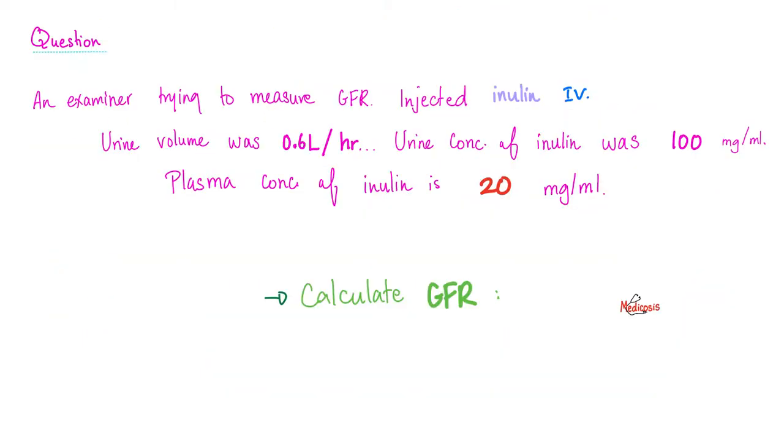An examiner is trying to measure GFR. The examiner injected inulin intravenously. The urine volume was 0.6 liters per hour. Urine concentration of inulin was 100 milligrams per ml. The plasma concentration of inulin is 20 milligrams per ml. Can you calculate the GFR? Let me know the answer in the comment section. You'll find the answer key in the next video, where we talk about creatine kinase.